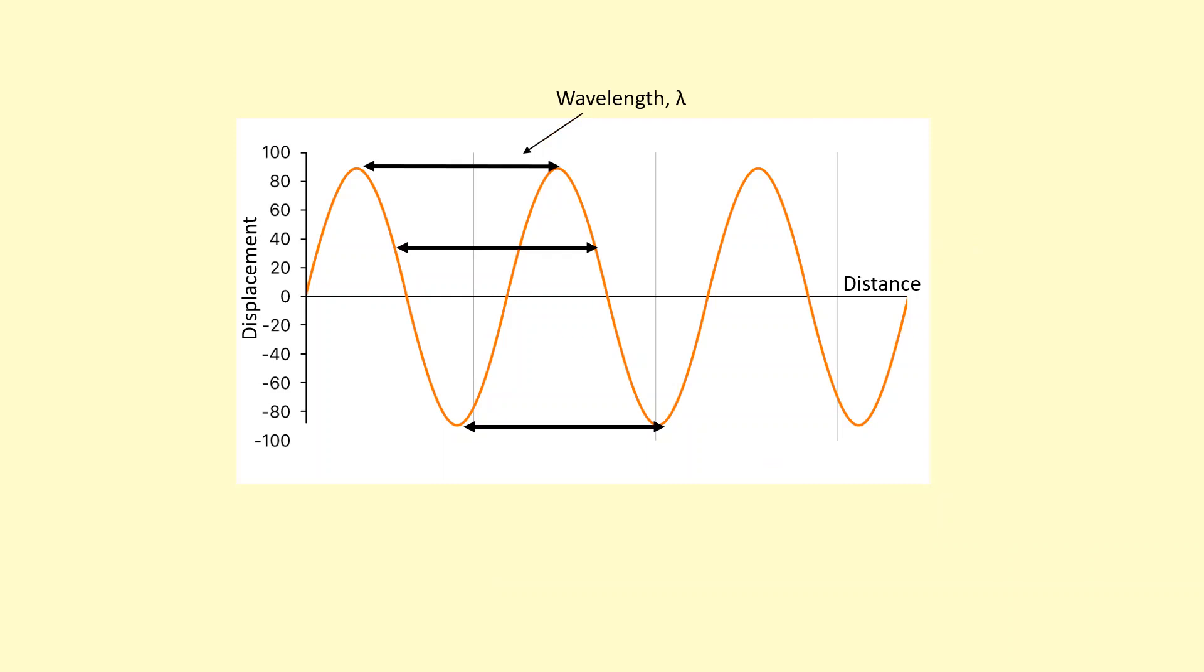However, sometimes instead of using a displacement distance graph, you can use a displacement time graph where now the graph represents the displacement of one particle and how that changes with time. So because now the x-axis is time not distance, this is not wavelength anymore. Instead, this is actually the time period - the time it takes for one complete oscillation.